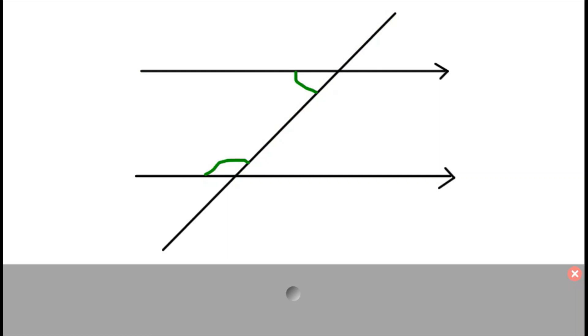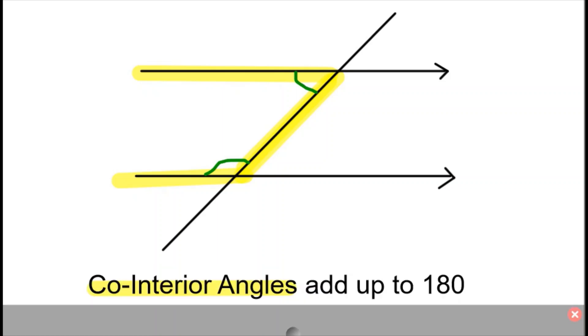Our third rule is when we've got an angle created by one of our parallel lines and the one intersecting, and then the line intersecting and the parallel line like so. It kind of creates sort of a C shape or a U shape depending on which way you look at it. Unlike the previous two examples, these two angles aren't equal. However, they add up to equal 180, and we call them co-interior angles, or sometimes shortened to just interior angles.